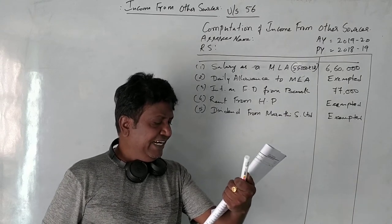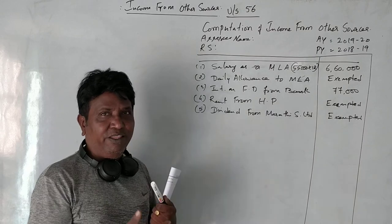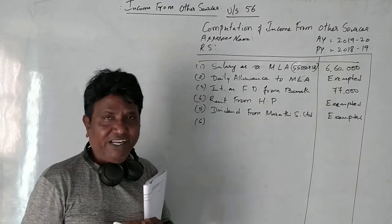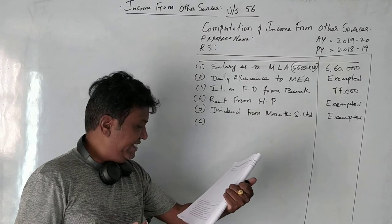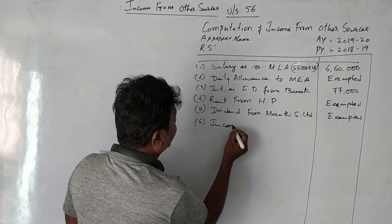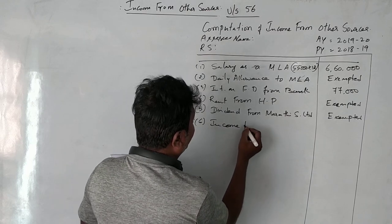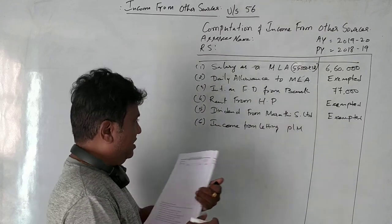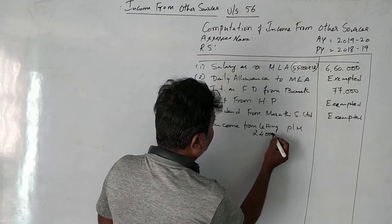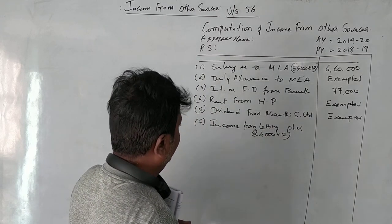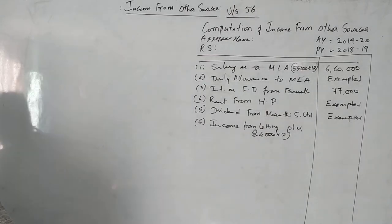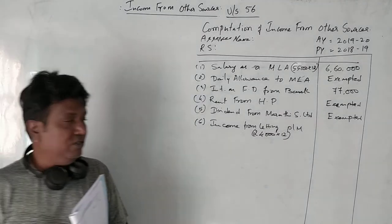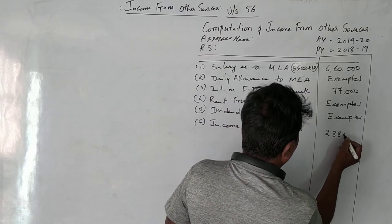Next is income from letting out plant and machinery. Mr. Prashant, as an MLA, is occasionally hiring out plant and machinery to others and receiving income from it. This is taxable under the head income from other sources. Income from letting out plant and machinery: 24,000 per month for 12 months equals 2,88,000 rupees.